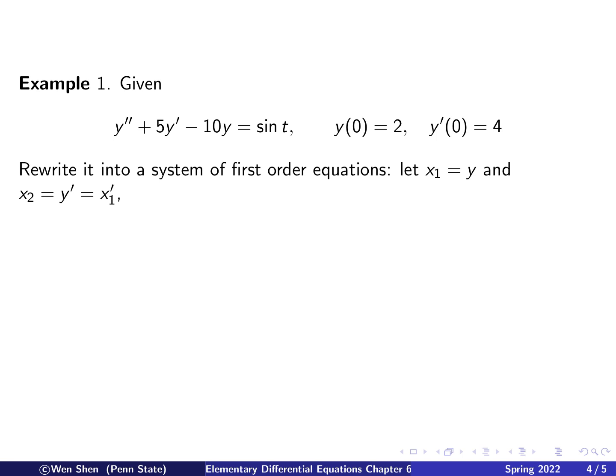Let's practice and rewriting it into a system of first-order equations. So introduce the new variables, x1 and x2, such that x1 is y, and x2 is y prime, which is x1 prime. And then we can write out the system of equations for x1 prime equals x2, that's per definition. And then x2 prime would be y double prime. And then we use this equation to write it out. So move this term to the right-hand side, you get negative 5y prime, and then y prime is x2. And move this to the right-hand side, you get plus 10 times y, but y is just x1, and plus sine of t.